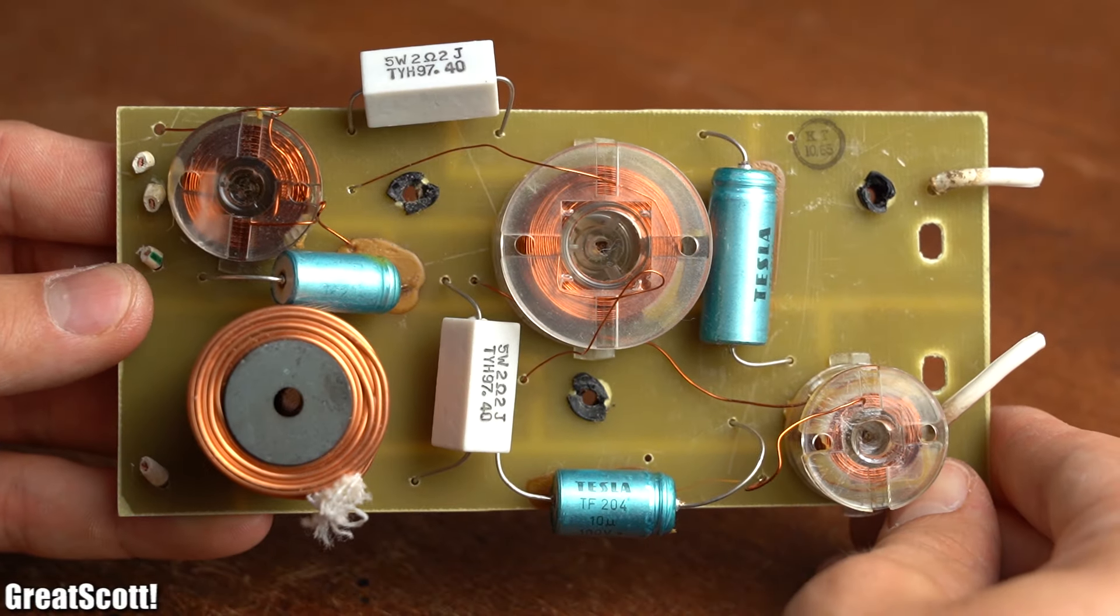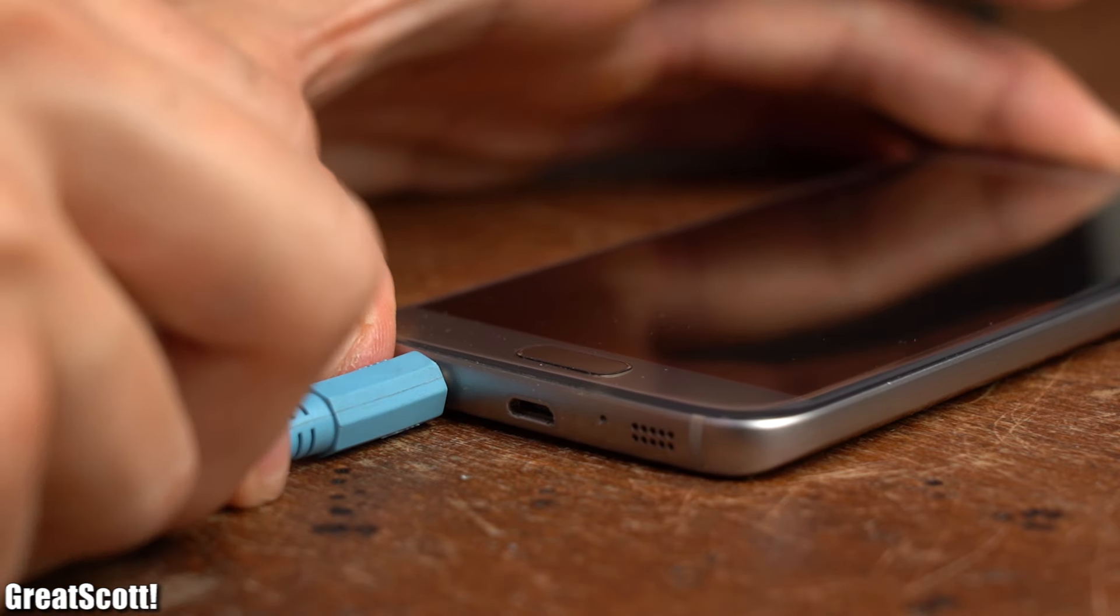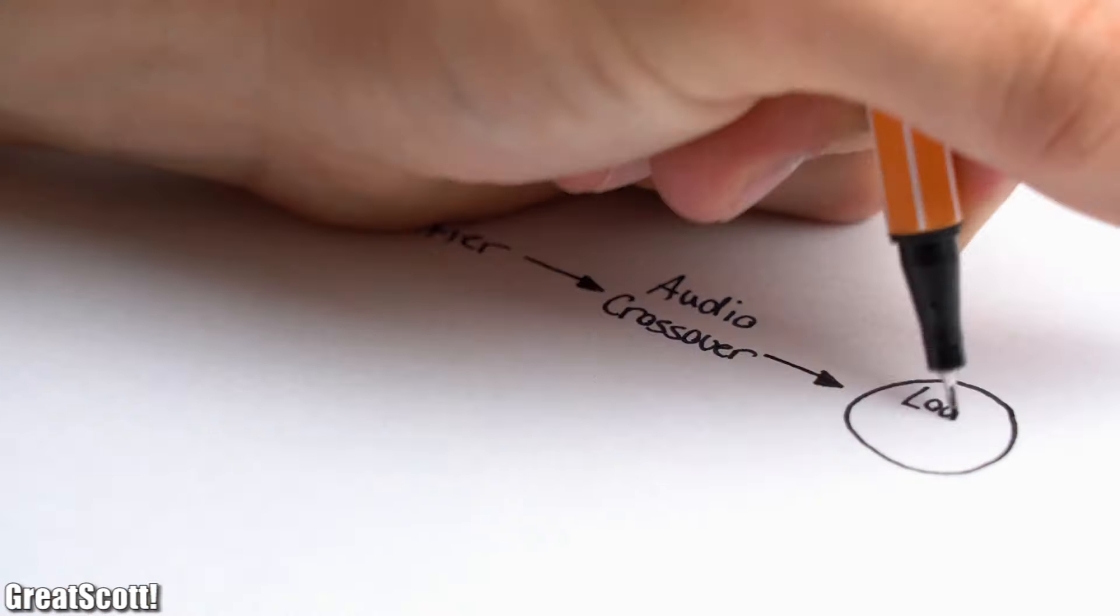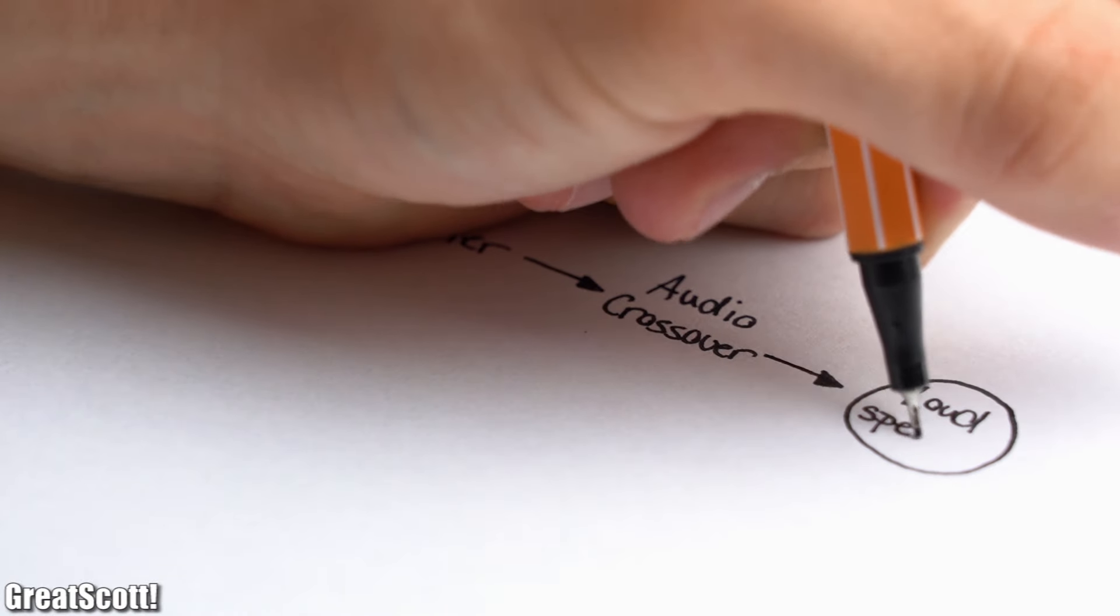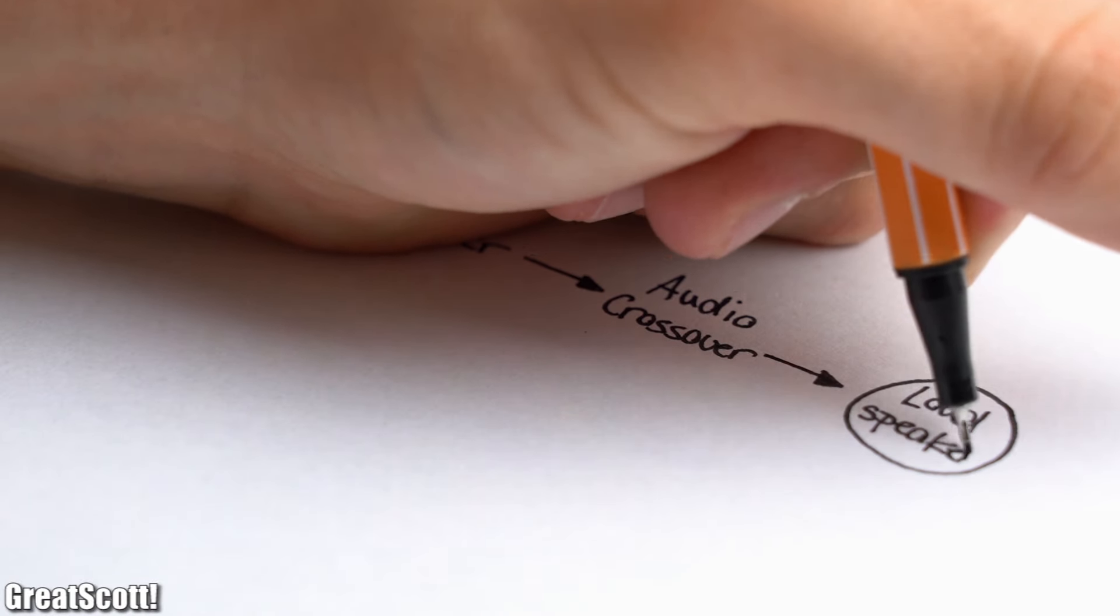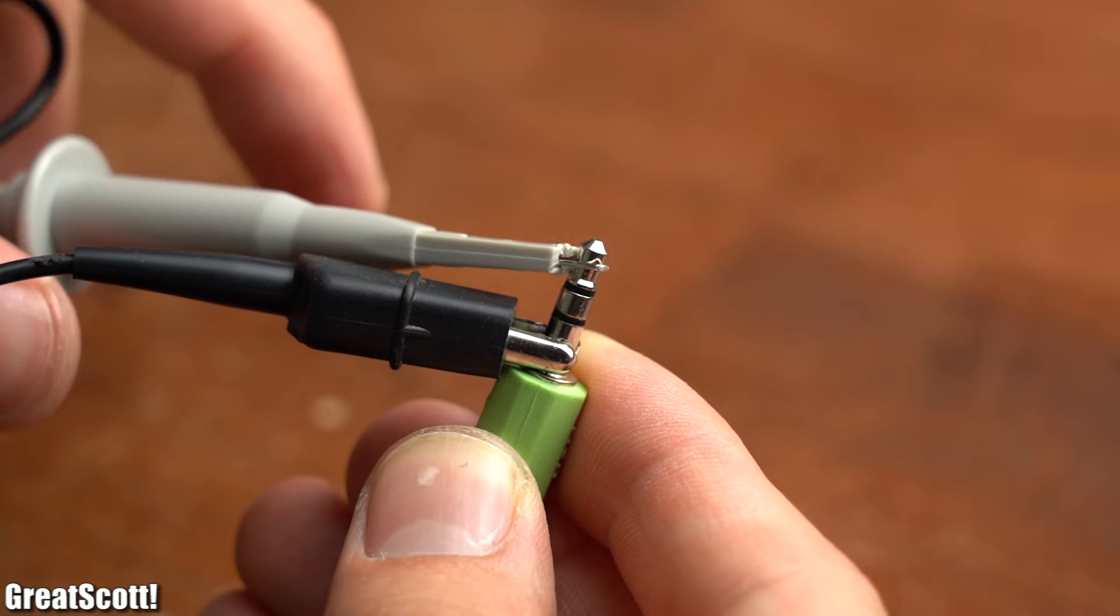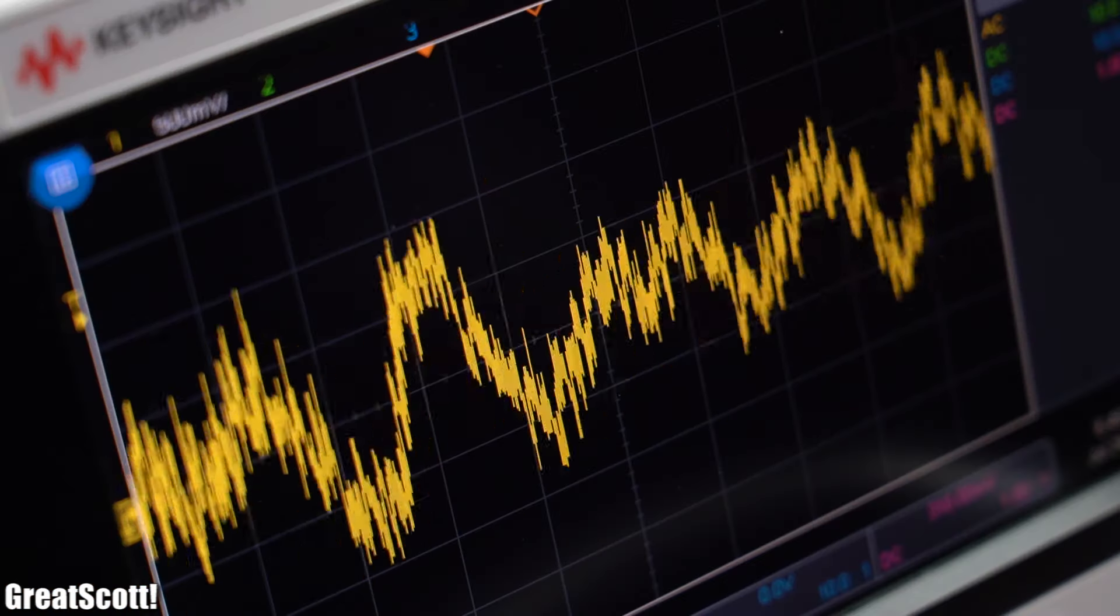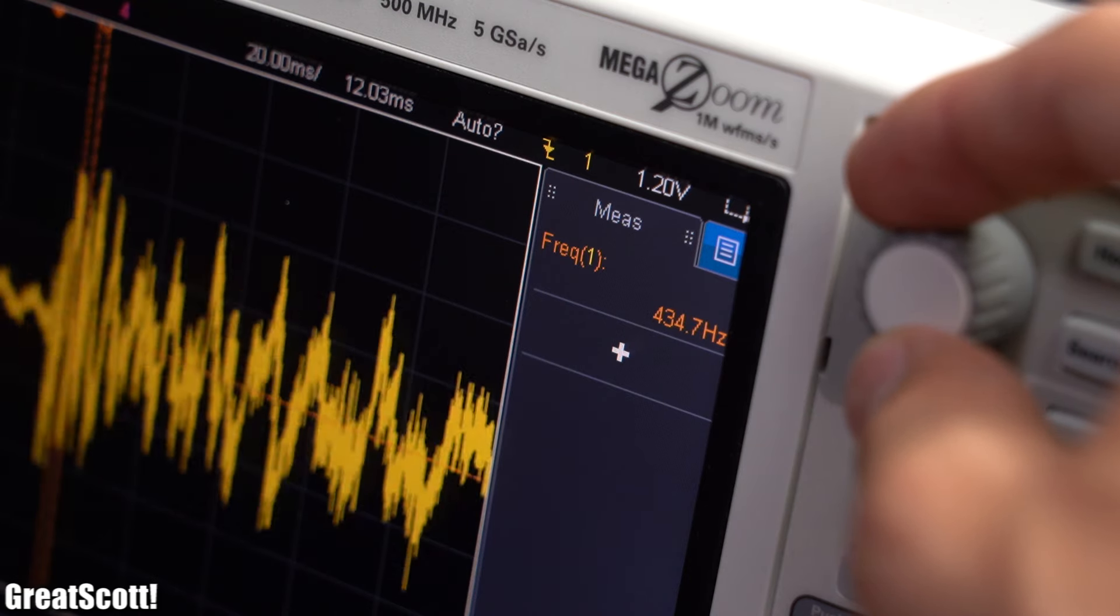Before we have a closer look at the old audio crossover, let's first have a look at a typical audio signal. This smartphone audio signal would obviously need to get amplified before entering the audio crossover and finally the loudspeakers. But by having a look at the signal on the oscilloscope, we can already find out that we are dealing with an AC signal that features frequencies from 20 up to 20,000 Hertz.